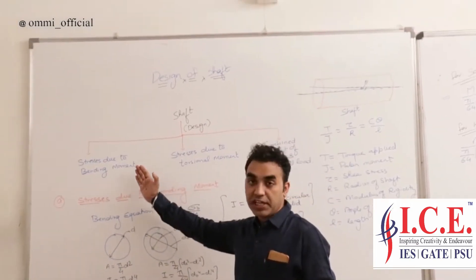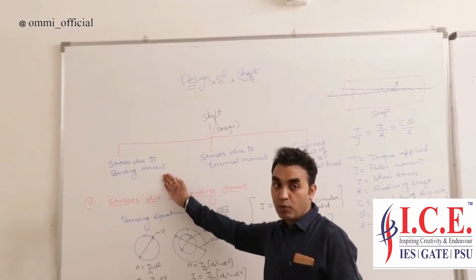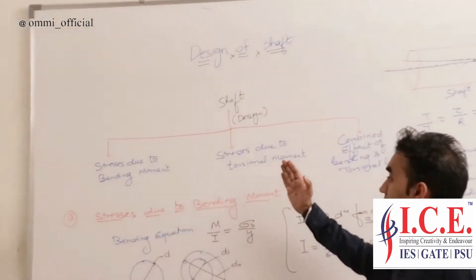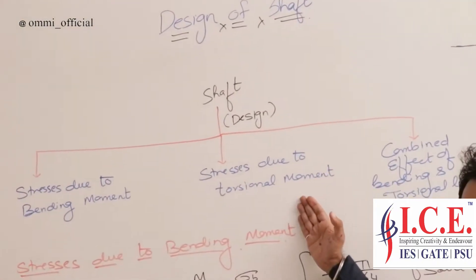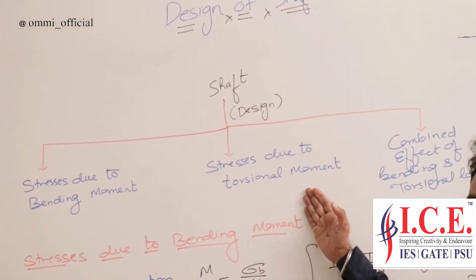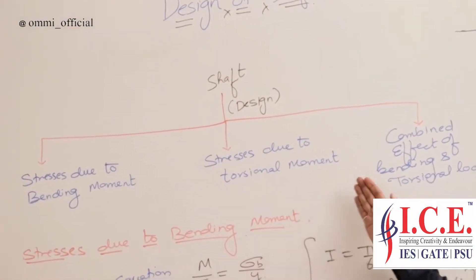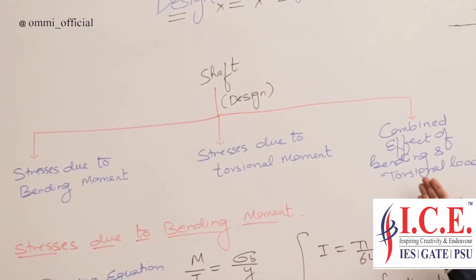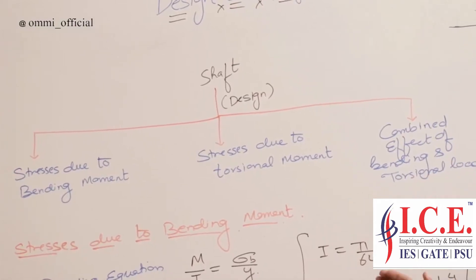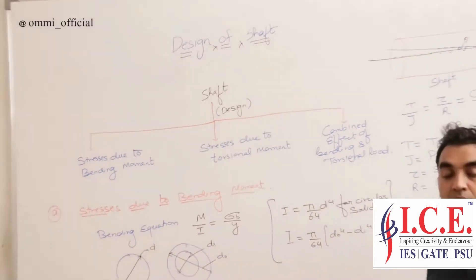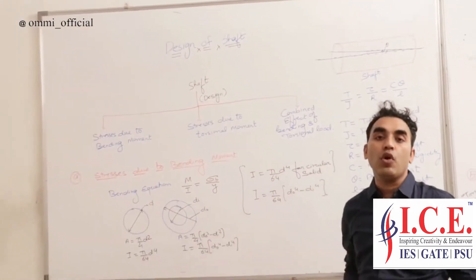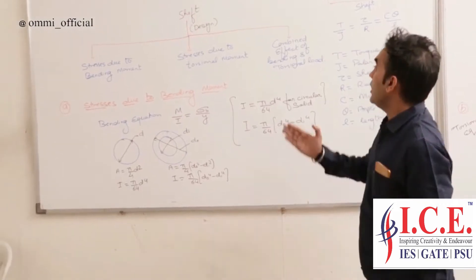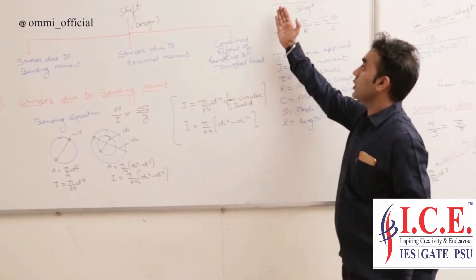First, stress due to the bending moment. Second, stress due to the torsion moment. And the last one is the combined effect of both bending and torsion. Before moving further, let's have a glance at the diagram.